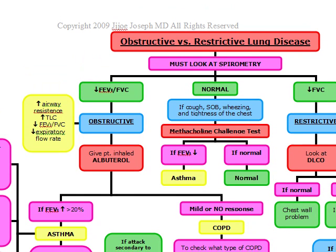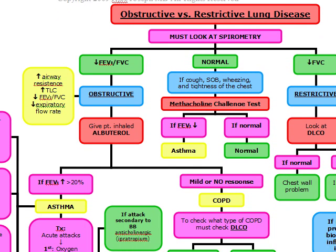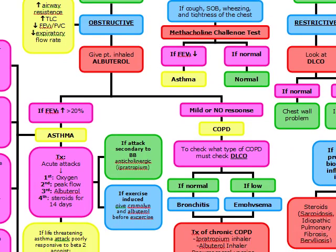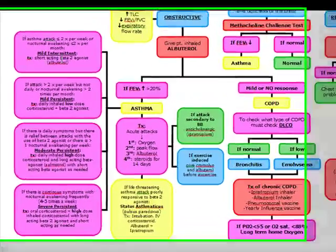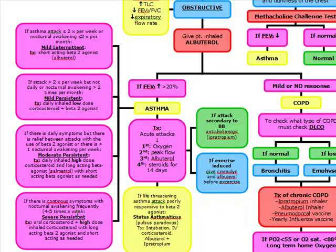There are four types of asthma: mild intermittent, mild persistent, moderate persistent, and severe persistent. Mild intermittent is when an asthma attack happens two or fewer times per week, or nocturnal awakening two or fewer times per month — treatment is short-acting beta-2 agonists such as albuterol only. Mild persistent is more than two times per week but not daily, or nocturnal awakening more than twice per month — treatment is daily inhaled low-dose corticosteroid plus a beta-2 agonist.